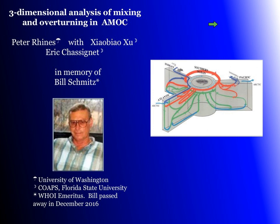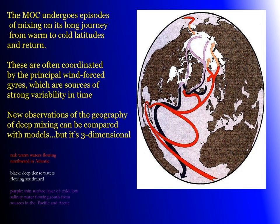Thank you, Mike. The FSU group and with me in Woods Hole many years ago — he passed away last December. So we know about the meridional overturning and the red northward branches and the black deep dense overflows, and this third little purple note here of Arctic outflows of very low salinity cold water at the surface. So if you're sitting at the Greenland-Scotland Ridge, you have a sort of a three-point water mass theta-S diagram to think about.